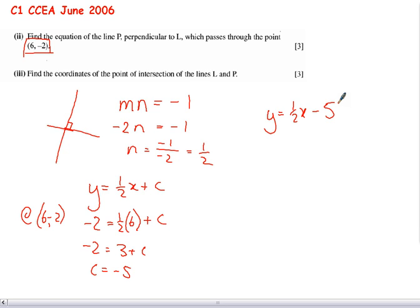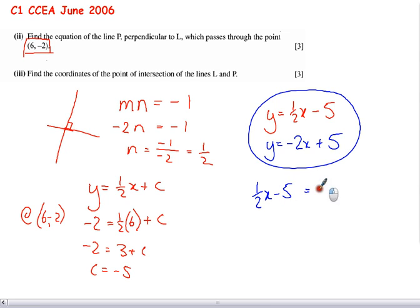Finally then, we're asked for the coordinates of the point of intersection of those two lines. In other words, where do they cross? Well, my first line was y equals negative 2x plus 5. And where they cross, these two lines will both be the same. In other words, we can say that the y values are the same. So a half x minus 5 will equal minus 2x plus 5.